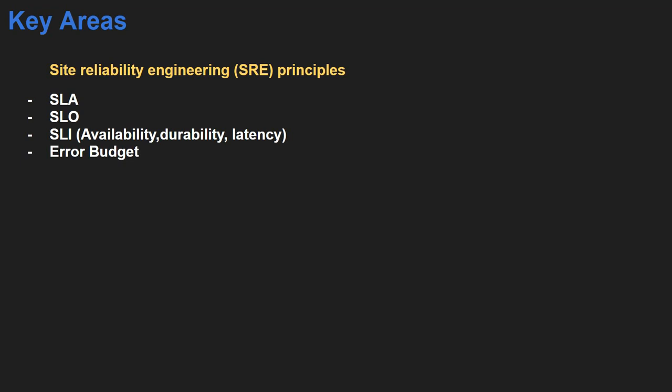Then there is error budget, which is related to your deployments and releasing new features. You have to determine the error budget first, and it will determine how frequently you can do releases or downtime for your application. There will be a few exam questions on error budget and SLO. Then there is toil — repetitive manual tasks in your current project. The main task of an SRE is to eliminate toil to avoid employee burnout. Toil elimination is a prime task of an SRE or DevOps engineer.